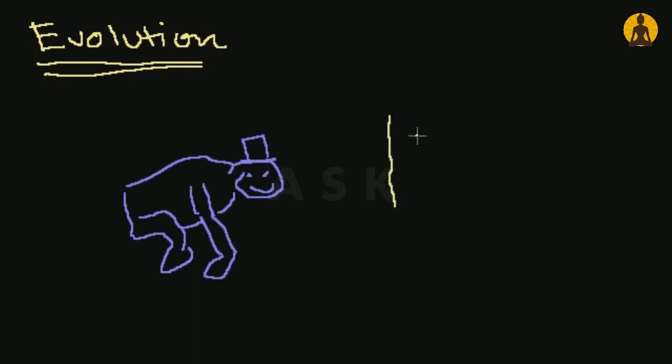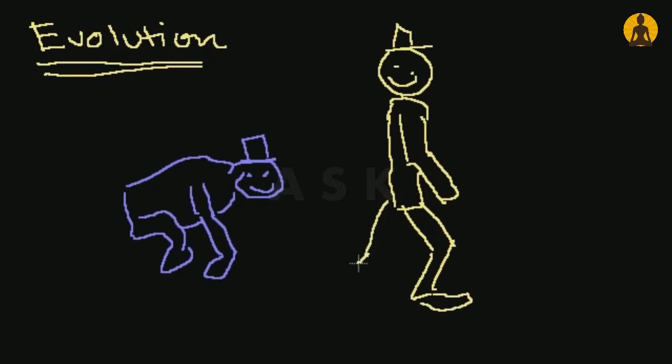They show this picture where he slowly becomes more and more upright, and eventually he turns into some dude who's just walking on his way to work, also just as happy, and now he's walking completely upright. He doesn't have a tail anymore. Let me eliminate that.